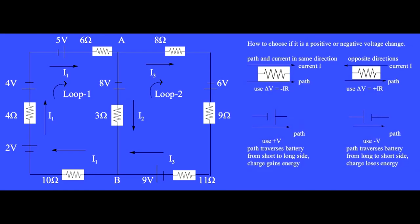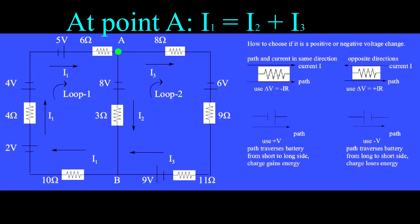Here again is the full circuit, with three wires each having its own current, and with 10 resistors and batteries. In this circuit we have three unknowns, which are the three currents I1, I2, and I3. To solve for three unknowns, we need three equations. First, let's write the conservation of charge at point A. The currents flowing into point A, that's I1, equals the currents that flow out of that point, which are I2 plus I3. So we have I1 equals I2 plus I3.